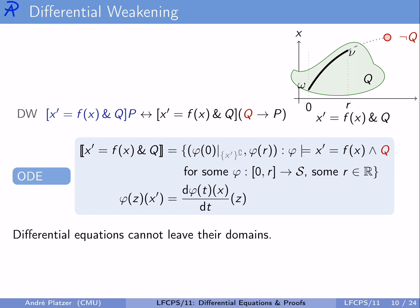That enables us to read off that differential equations by construction cannot leave their evolution domain constraints, which means any property P is true after the differential equation if and only if Q implies P is true after the differential equation. Indeed, that is an if and only if because following x prime equals F of x within Q, we already know Q is true. This differential weakening axiom is a way for us to tease out the evolution domain constraint from a differential equation — here we get it as an assumption.